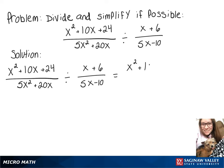So we'll have x squared plus 10x plus 24 over 5x squared plus 20x times 5x minus 10 over x plus 6.